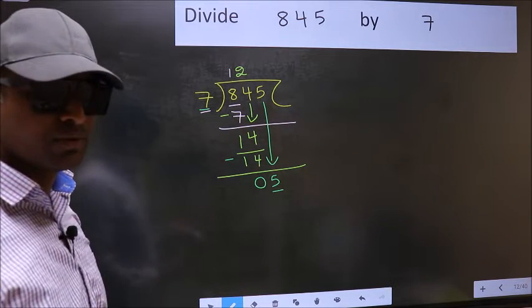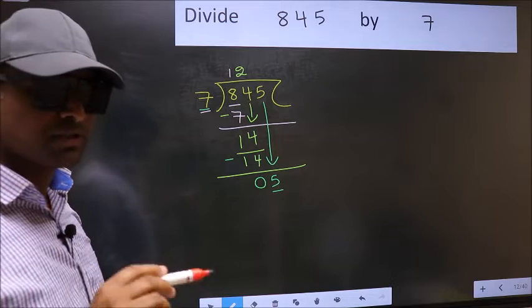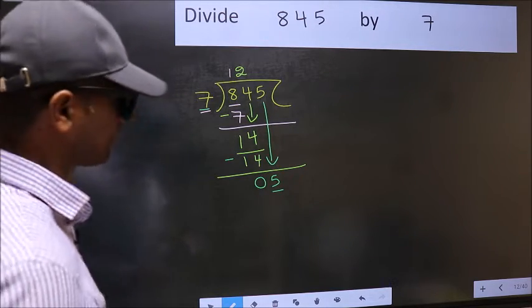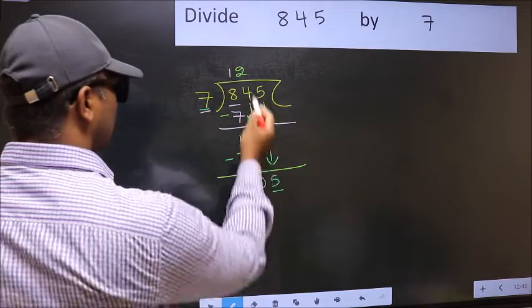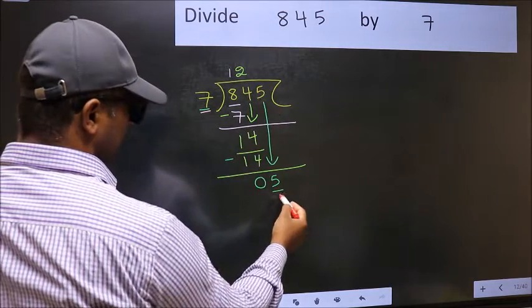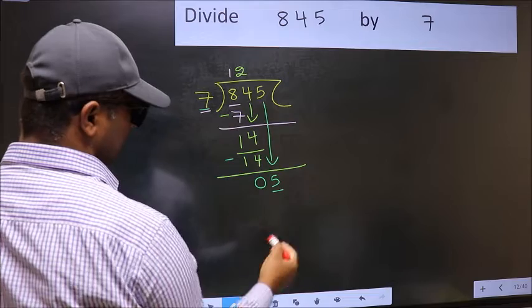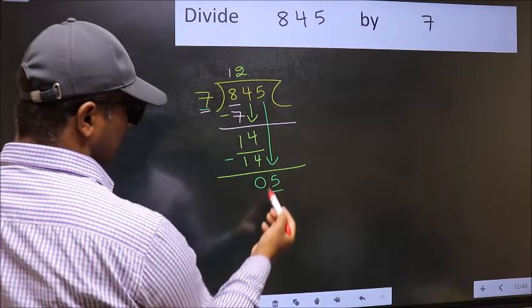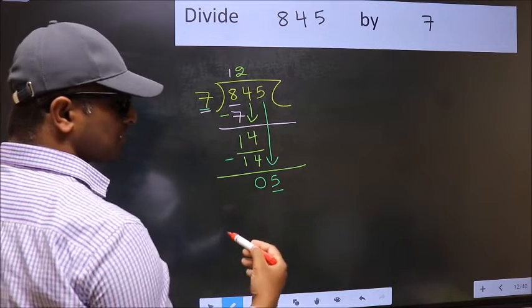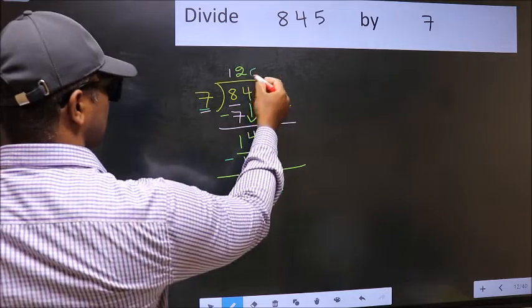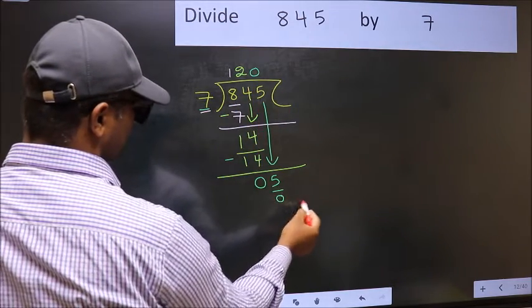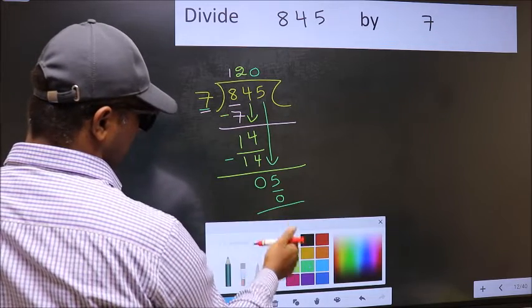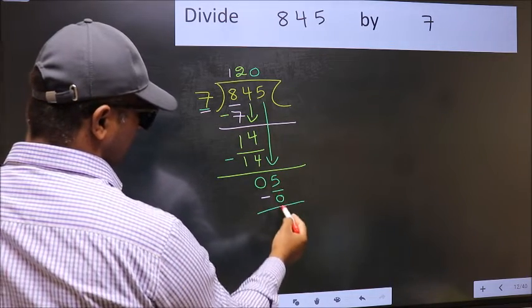You should not do. Instead, what you should think of doing is, which number should we write here? If I take 1, we will get 7. But 7 is larger than 5. So what we should do is, we should take 0. So 7 into 0, 0. Now you should subtract. 5 minus 0, 5.